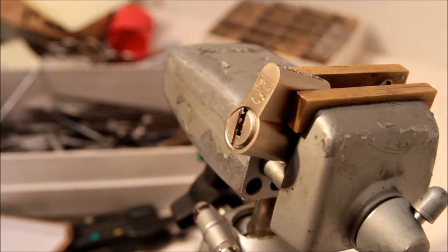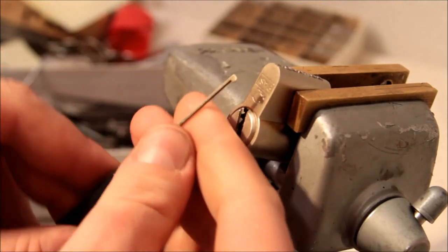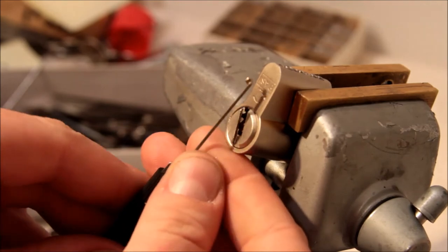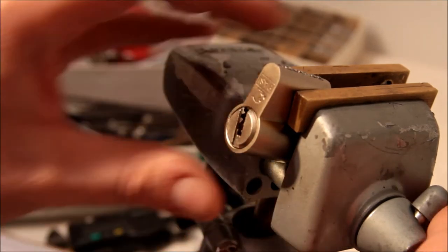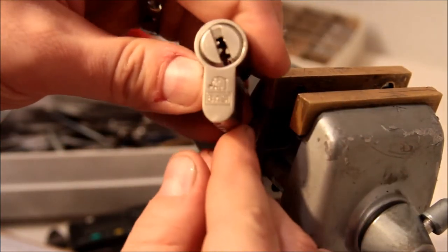So this was a GOSO locksmith tool. There's the pick for you. It's a BASI or BASI. What the hell it's called? Cylinder.